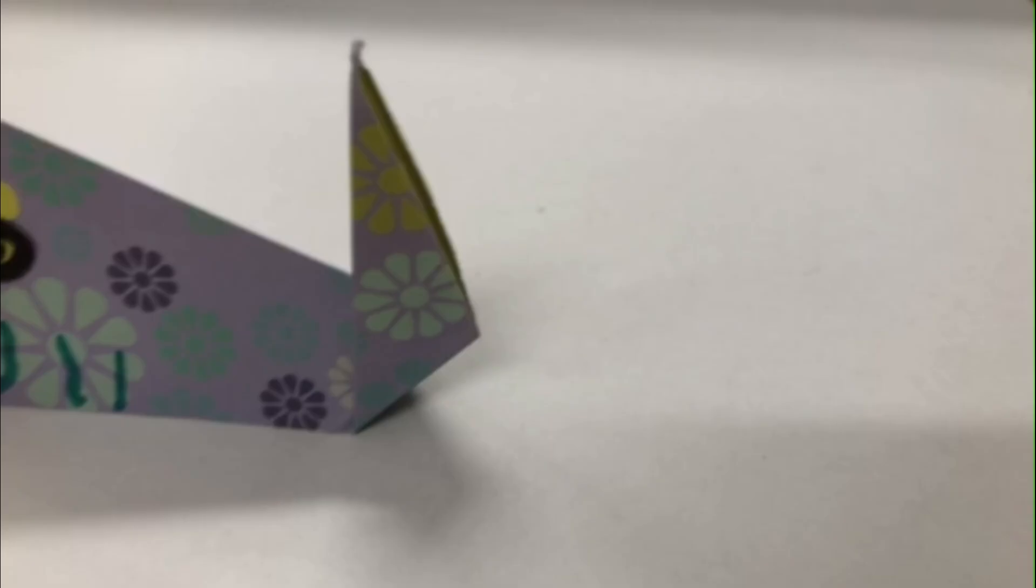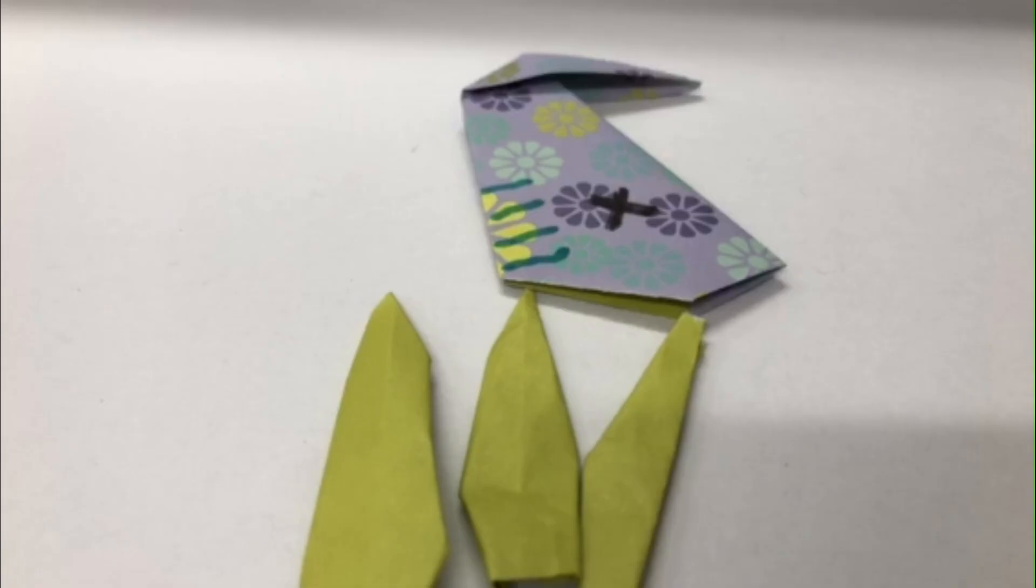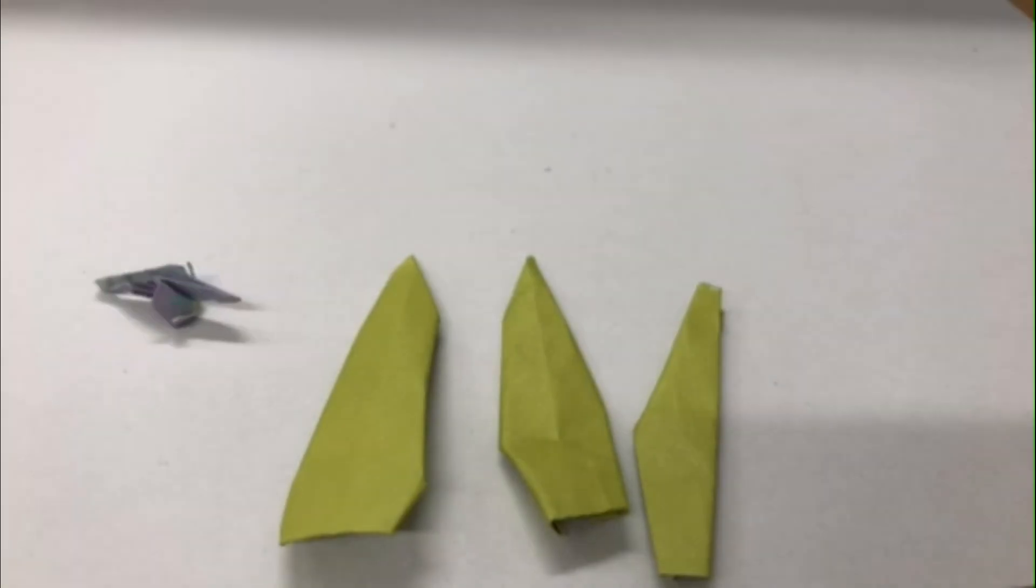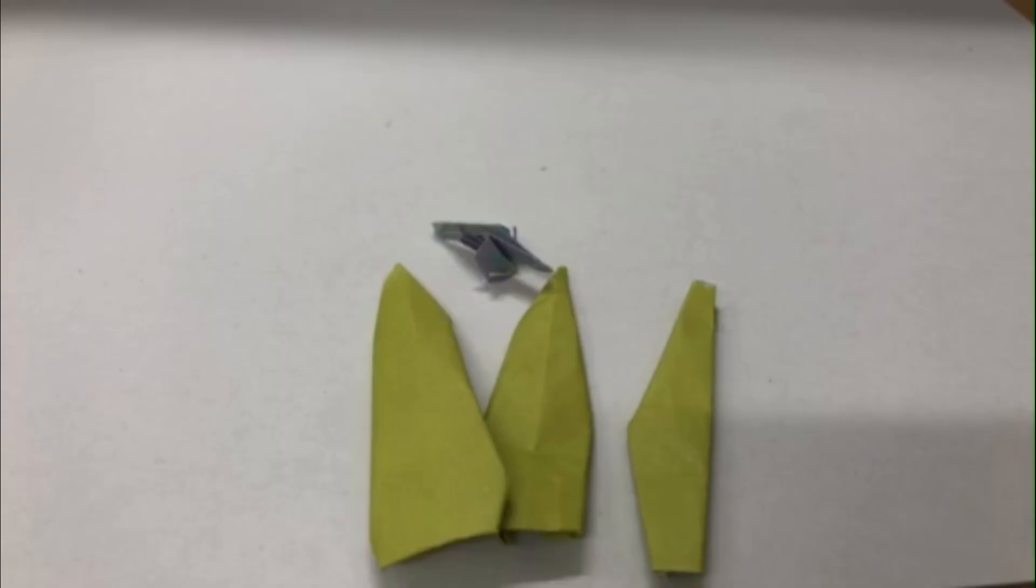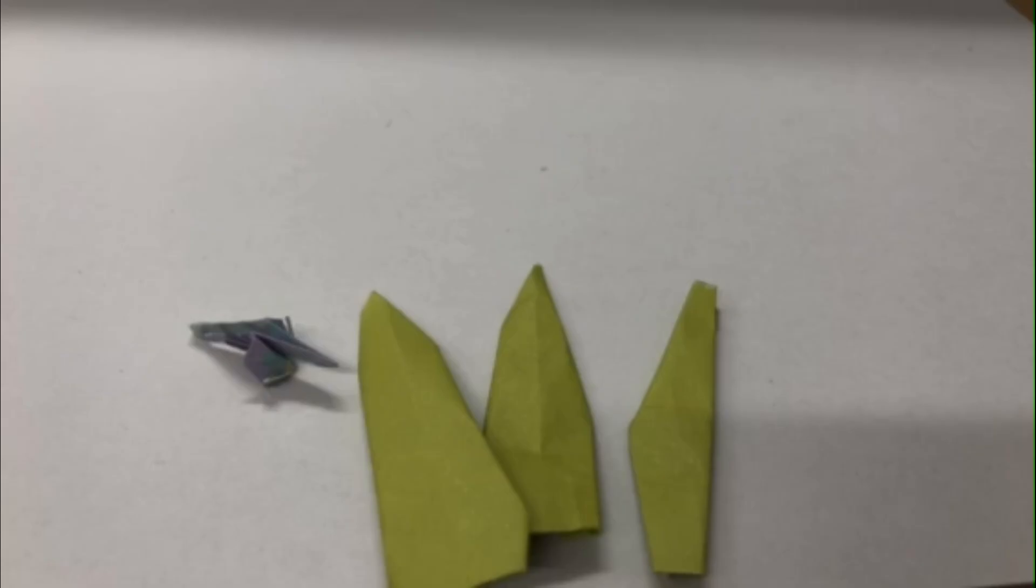Eventually the origami whale will die and sink to the bottom where it will be decomposed by the origami coral. The plankton eats some of the coral and the cycle starts again.